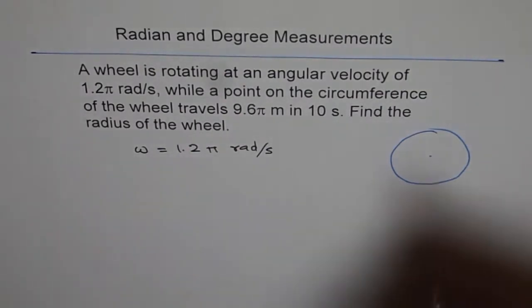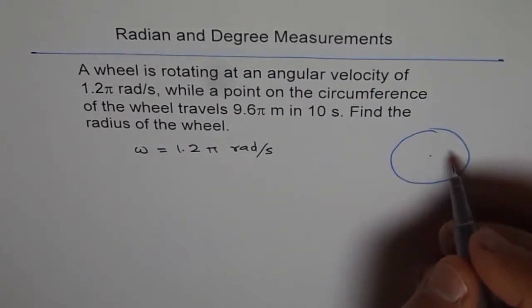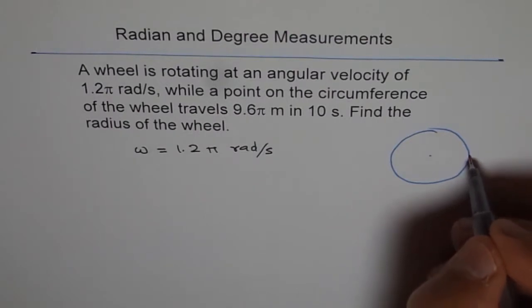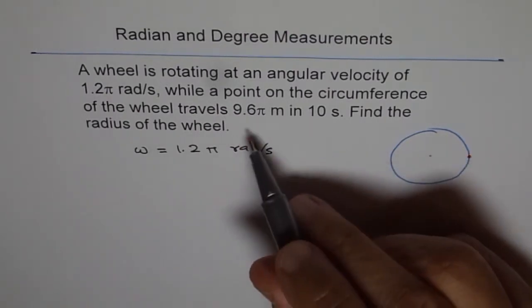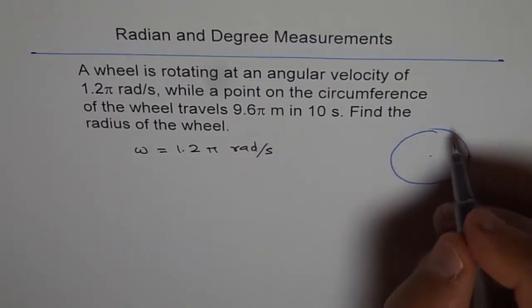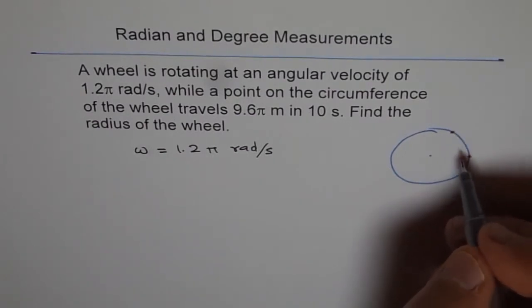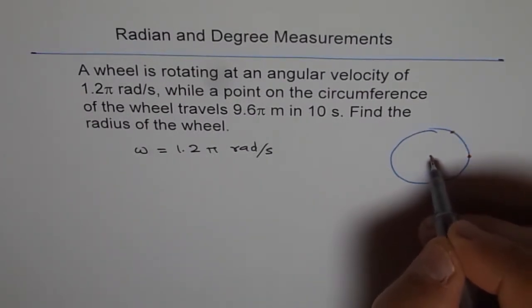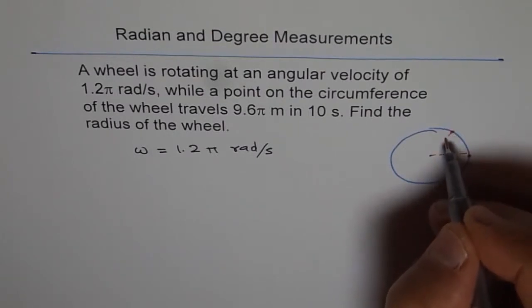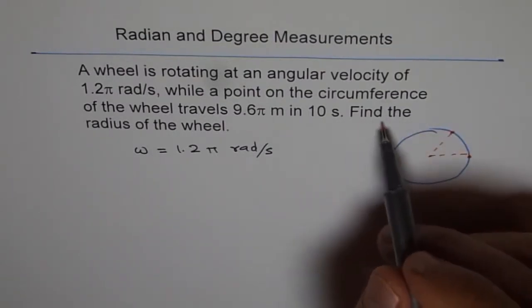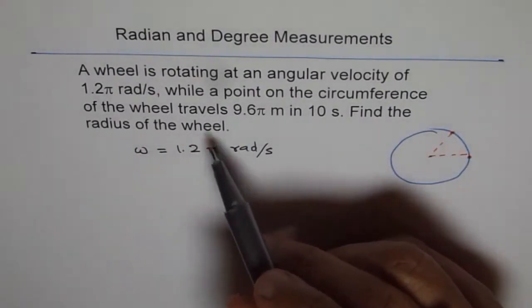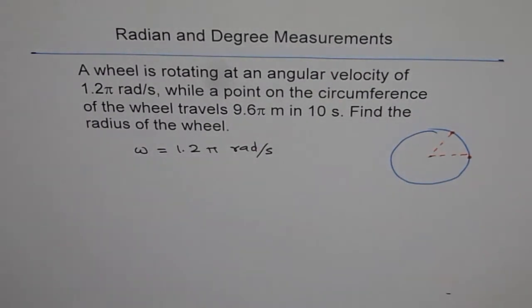Now it says while a point on the circumference of the wheel travels 9.6π. So I don't know where 9.6π will land, but let me assume this point is here. Now, in 10 seconds, find the radius of the wheel. So we have to find the radius r of the wheel.